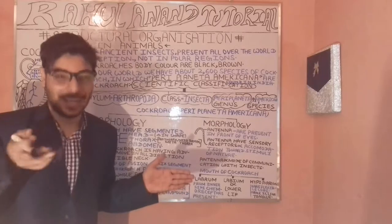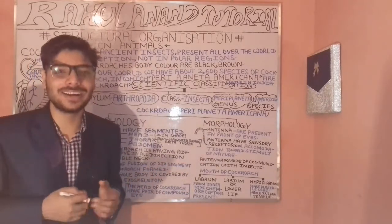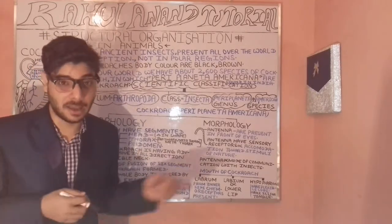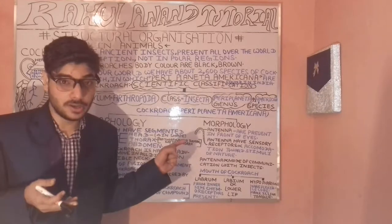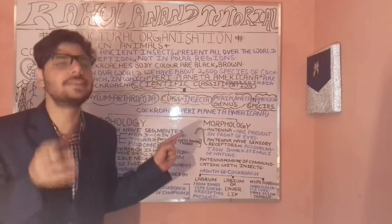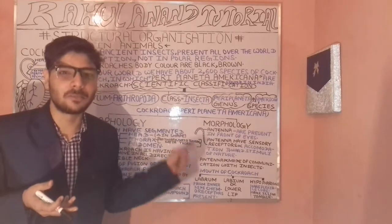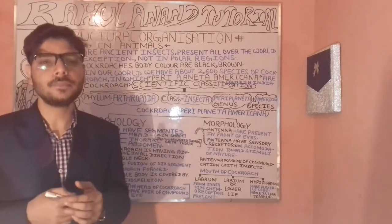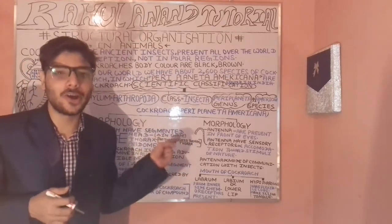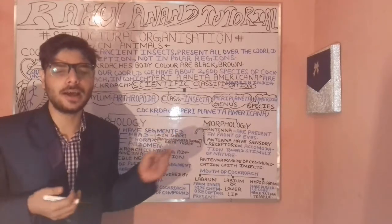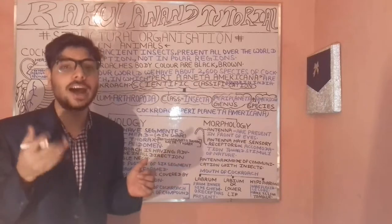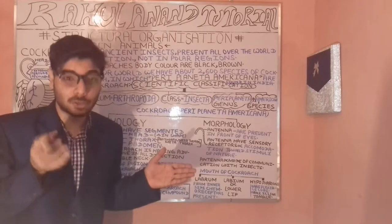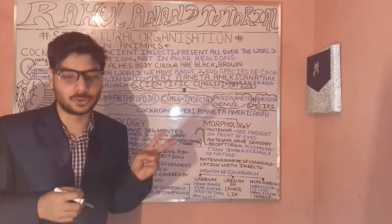We will be understanding about Periplaneta americana. These are found in India. Now let's understand the basic classification of Periplaneta americana. The cockroach belongs to the phylum Arthropoda. Arthropoda means jointed legs — organisms having jointed leg-like structures come under Arthropoda.